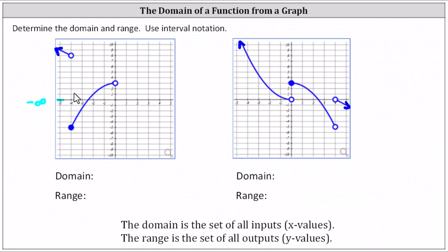Notice there is a break in the graph at x equals negative four, but because of this closed point, negative four comma negative five, the function is defined at x equals negative four, and negative four is in the domain. Continuing to the right, the rightmost point is where x equals zero. Because we only have an open point at x equals zero, zero is not in the domain. This indicates the domain is the open interval from negative infinity to zero. The parenthesis to the right of zero indicates zero is not in the interval, and we always use parenthesis for plus or minus infinity.